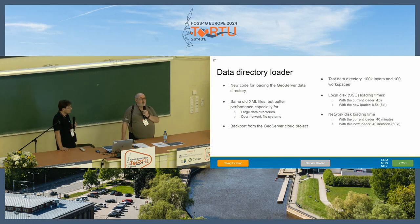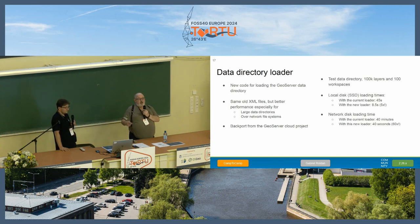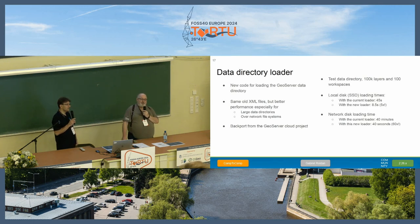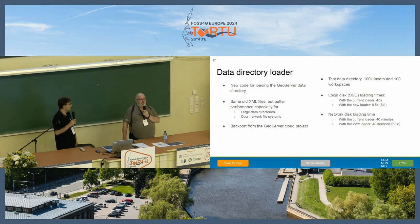Gabriel at Camp2Camp, as part of his GeoServer Cloud project, improved the data directory loading — it's now much faster, five to sixty times faster depending on your setup. For the moment this is a community module so it's not part of the core yet, but we have a pull request to make it the new default loader for 2.26. All your config will still work in exactly the same way, but it will go much faster.